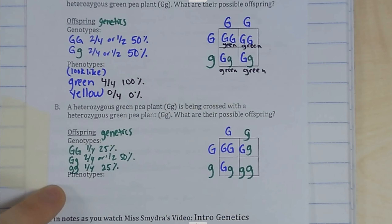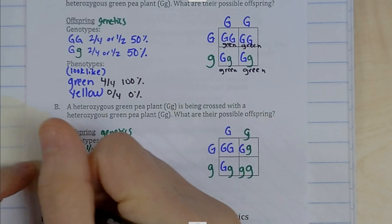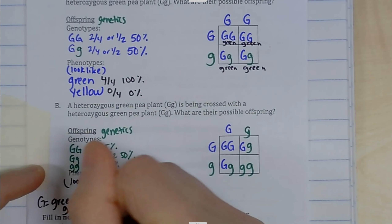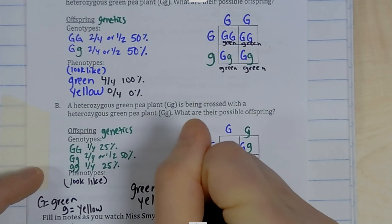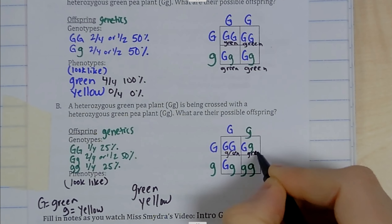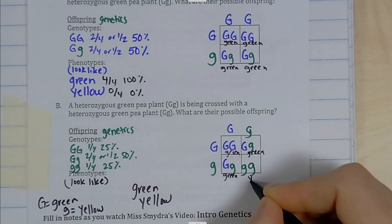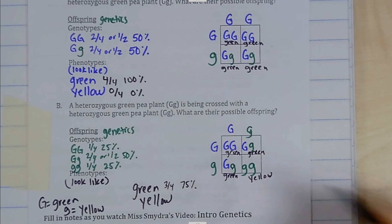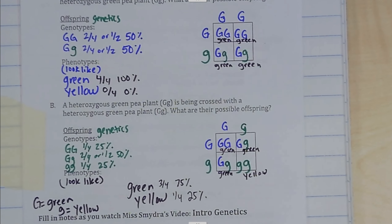Now let's see what they could possibly look like. Green is dominant and yellow is recessive, so they can either be green or yellow. Big G big G is going to be green because it's dominant — same with big G little g, that's also green. Our recessive little g little g is going to be yellow. So how many are going to be green? Three out of four, which is 75%, are going to be green. How many are going to be yellow? One out of four, 25%, are going to be yellow.